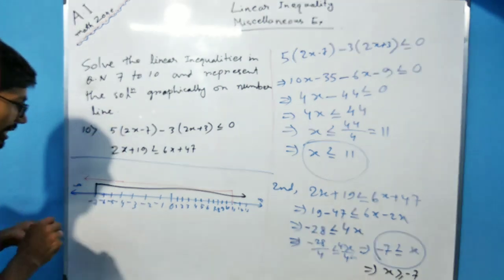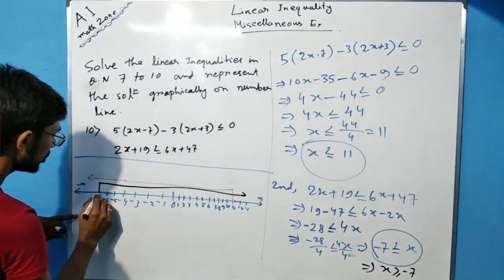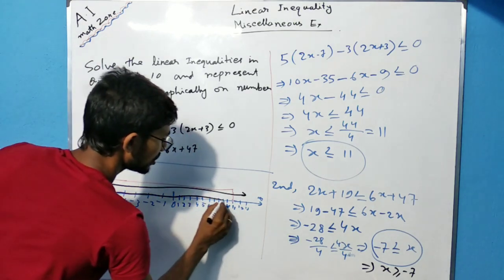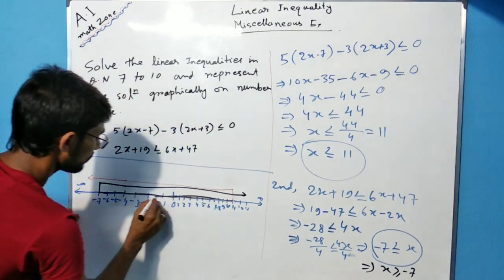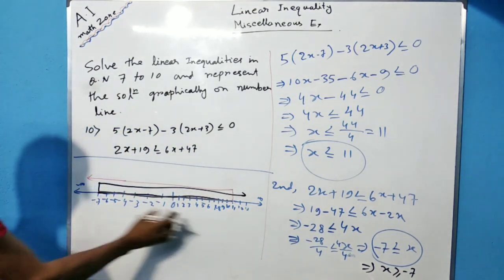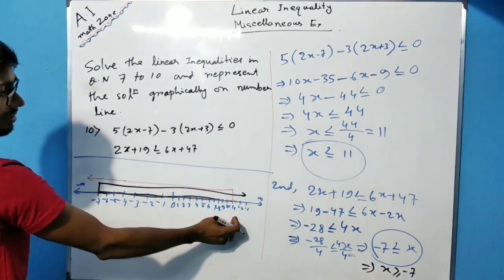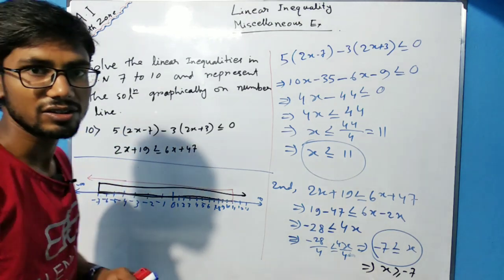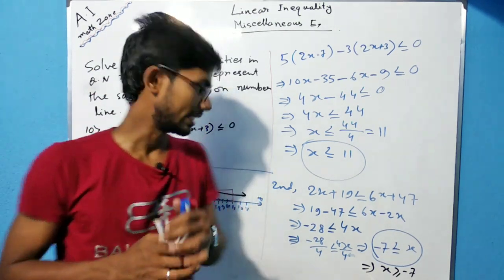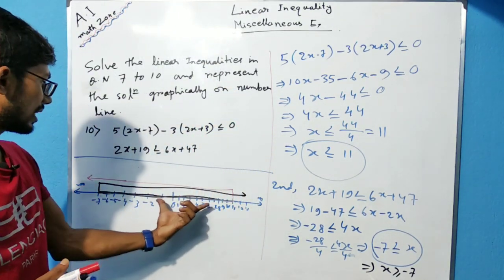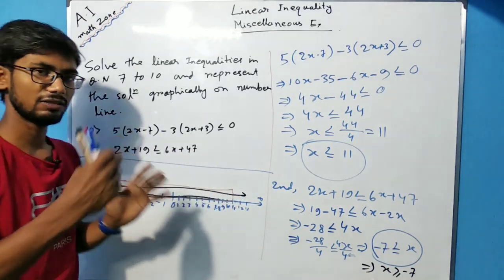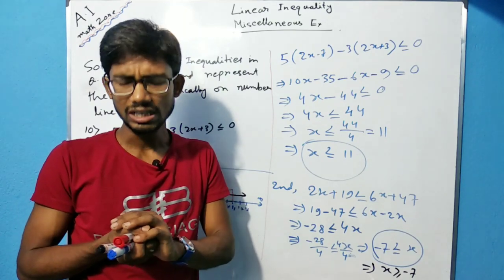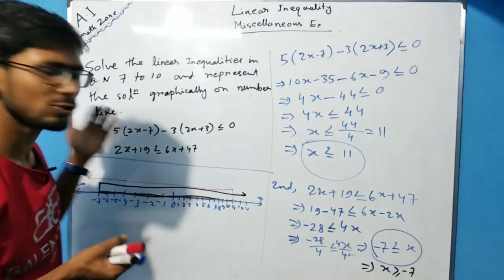So ultimately the solution of the given linear inequality is the part from minus 7 to 11 on the number line — this is the solution part, from minus 7 to 11. You should try the remaining questions.